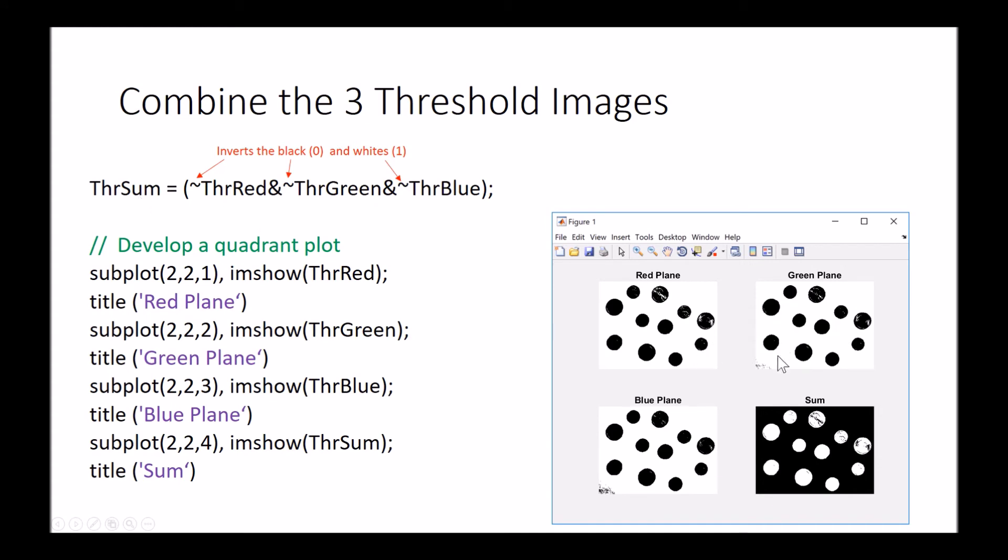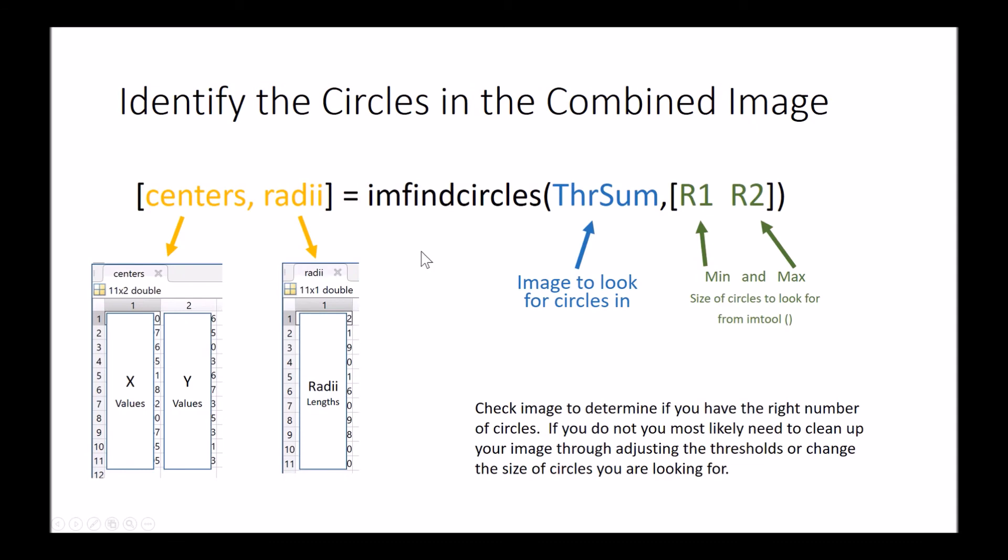To get the diameters of the circles we then have the ability to combine them. We've got three images, we might as well use them, and so we're going to invert them so we get this white on black image. We'll plot all those together just to make sure that they're all looking appropriately and that's going to allow these circles to be even cleaner.